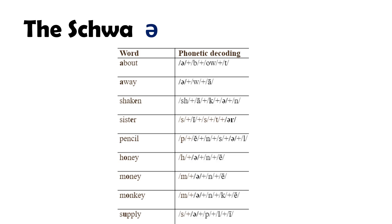Let's see some words where the schwa is used: About, Away, Shaken, Sister, Pencil, Honey, Money, Monkey, Supply.